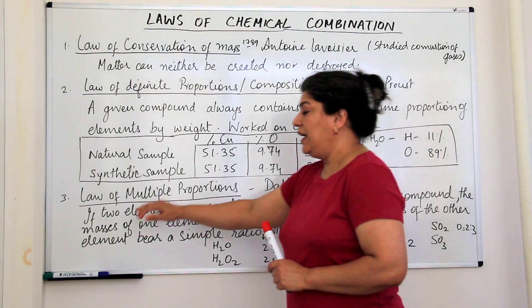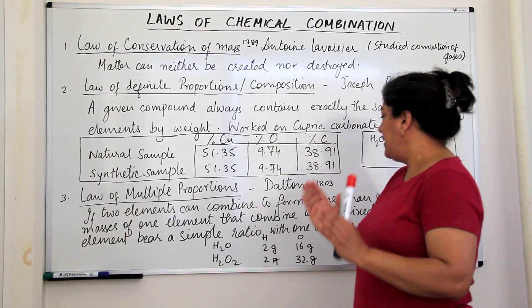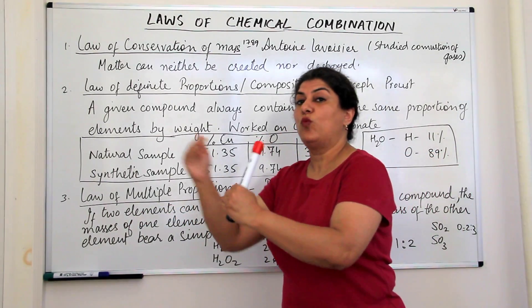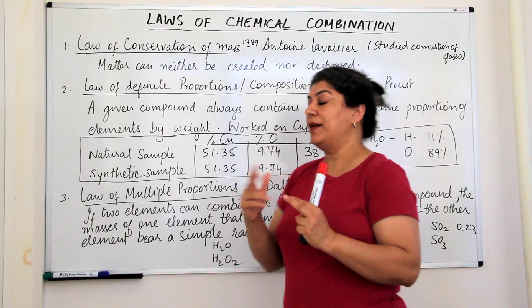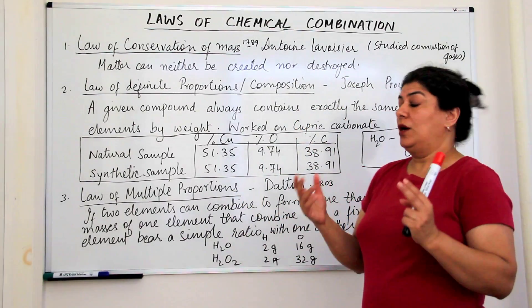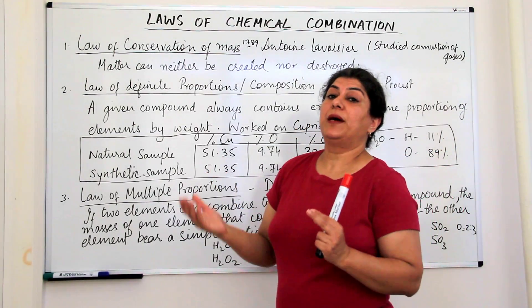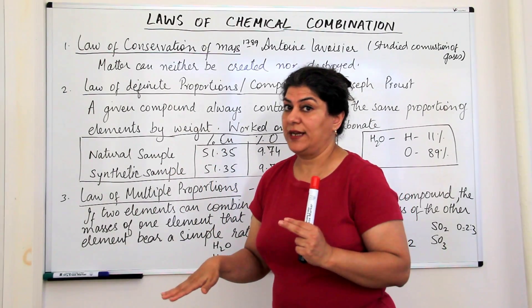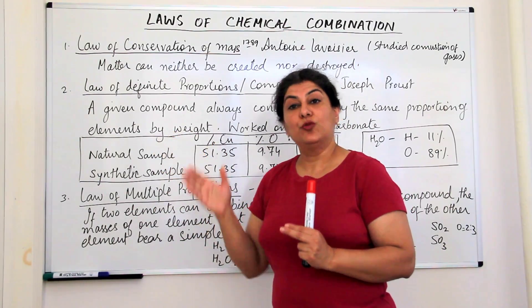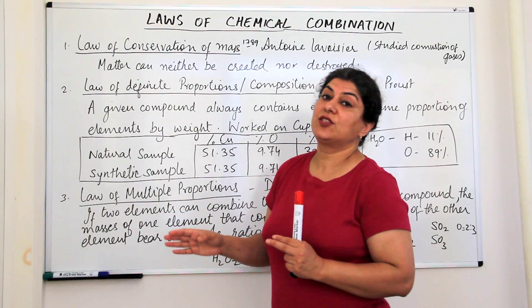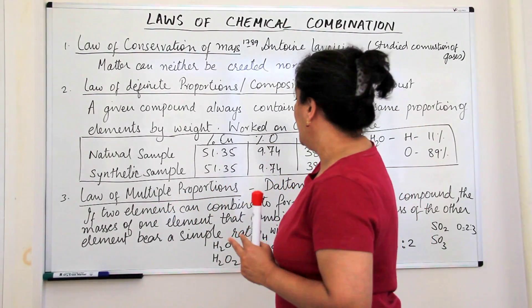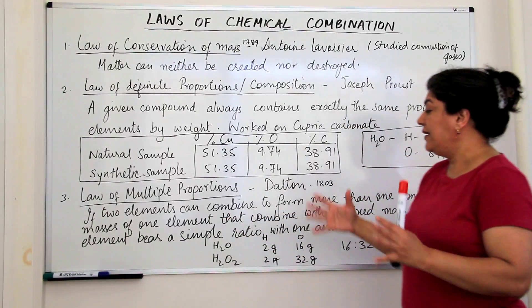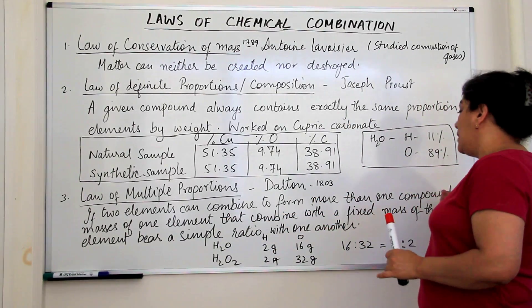I will repeat it. If two elements can combine to form more than one compound, if two elements combine, for example, hydrogen and oxygen combine to form water and they also combine to form hydrogen peroxide. Water has the formula H2O and hydrogen peroxide has the formula H2O2.